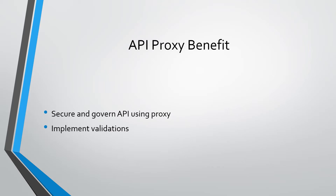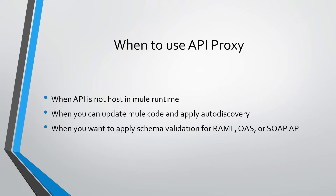We use API proxy when an API is running but it is not hosted in Mule runtime — in that case you need to create an API proxy to govern the API. Also, if it is a Mule application and you cannot update that application or apply auto-discovery, then you need to use API proxy. You can also use API proxy if you want to apply schema validation for each request for RAML, OAS, and SOAP APIs.